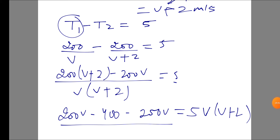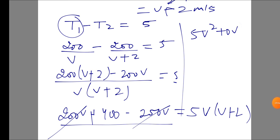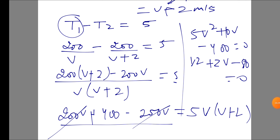Now we can solve this. Expanding gives us 200V + 400 minus 200V = 5V(V+2). This simplifies to 400 = 5V² + 10V, which gives us 5V² + 10V minus 400 equals 0. Dividing both sides by 5 gives V² + 2V minus 80 equals 0.